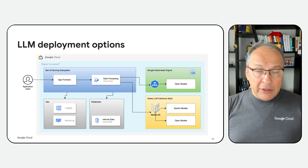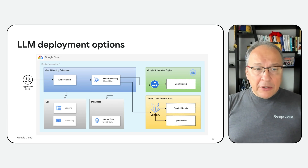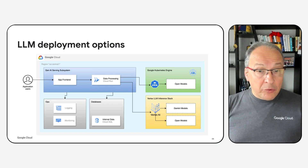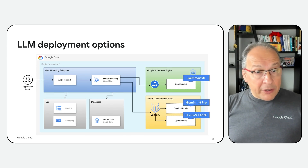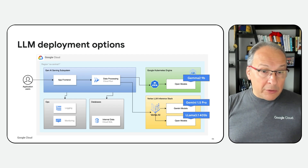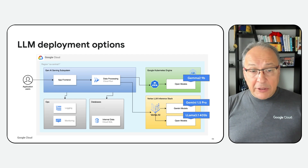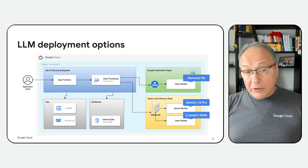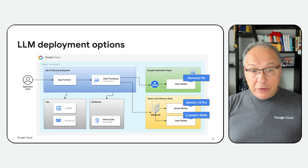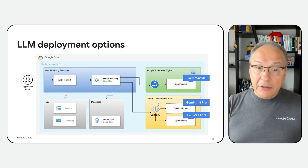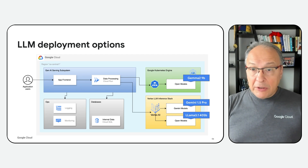We're familiar with building applications in the cloud. Let's take a serverless application. Now we want to work with a large language model. We have multiple choices. We can use a proprietary model like Gemini 1.5 Pro, but we can also deploy an open source model in Vertex. On the Kubernetes side, we have the choice of deploying open source models like the new Gemma 2 model.